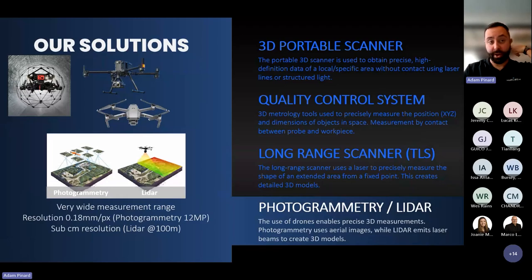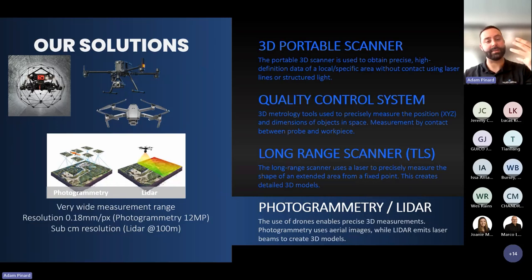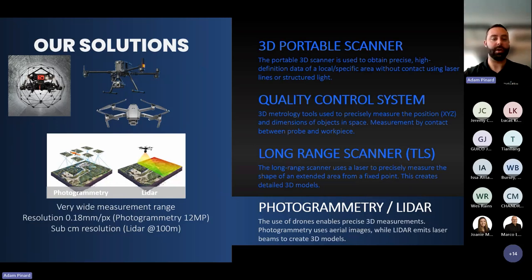Another solution we provide is drone measurement. There are two types of 3D scanning we can perform with a drone: photogrammetry or LiDAR. LiDAR emits a laser beam on the surface or environment and records the laser deformation to generate a point cloud. Photogrammetry takes a series of pictures at different points of view, and the software takes all these pictures and generates a 3D model from them.